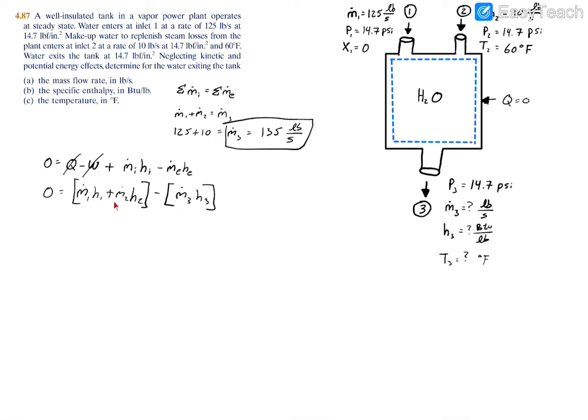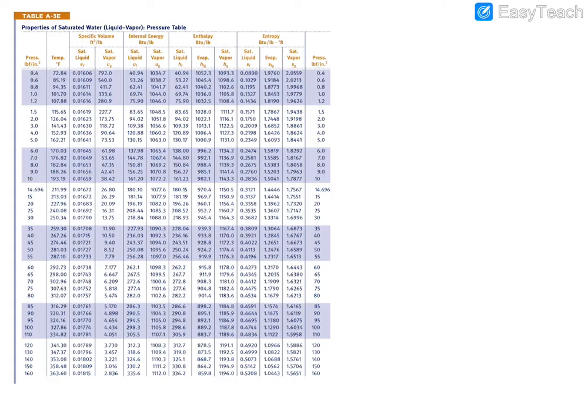We have the mass flow rate at both inlets and we solved for it at the exit. We don't have the enthalpies at either inlet, and we're looking for the exit. To find H1, we have two things: the pressure and the state or quality.